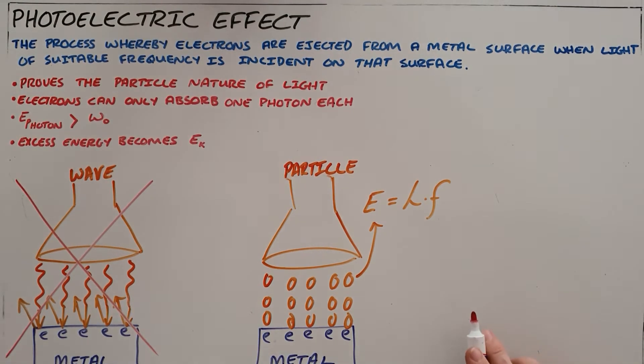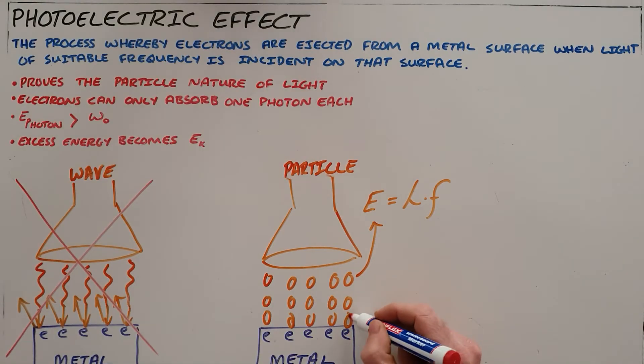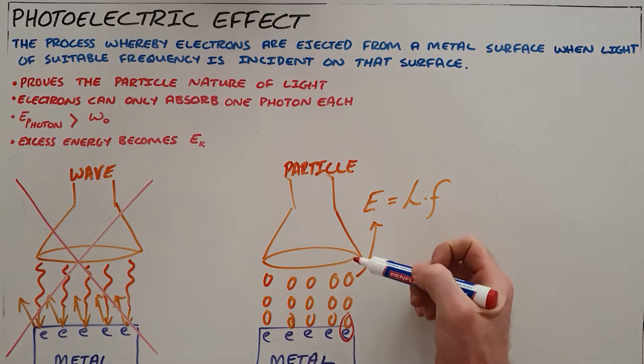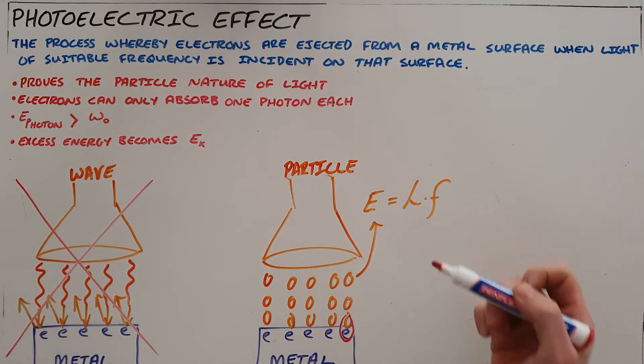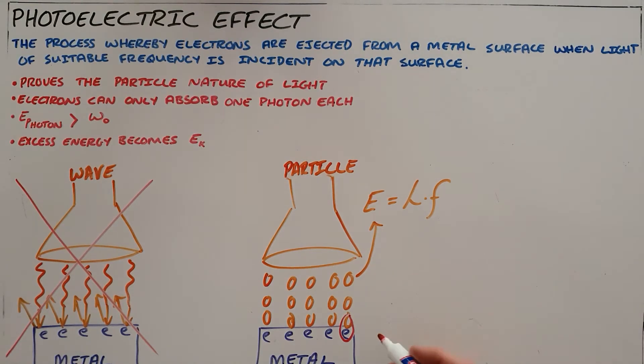Now the reason why this explanation is considered to be correct is because we know that each electron can only absorb a single photon of light, and if they can only absorb one photon of light, that then explains why the photoelectric effect only occurs at certain times or at certain frequencies, and that is because each metal has a specific amount of energy that is required for an electron to escape.